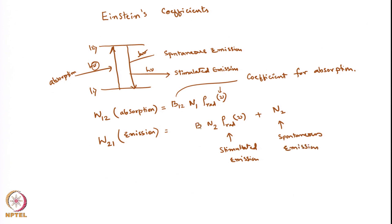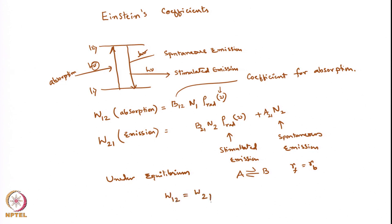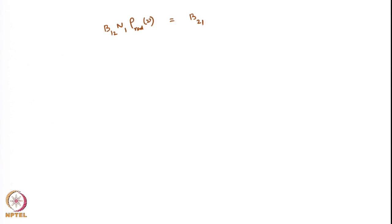The proportionality constants are B21 and A21. Under equilibrium conditions, the rate of forward reaction must equal the rate of backward reaction, so W12 must equal W21. This gives us: B12 N1 rho(nu) = B21 N2 rho(nu) + A21 N2.